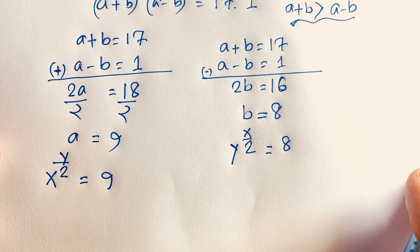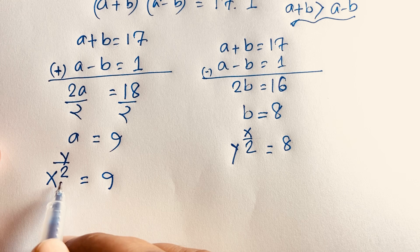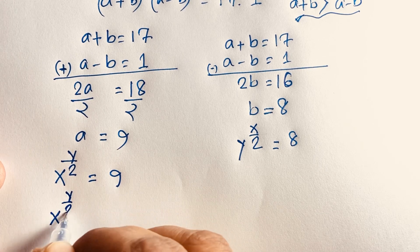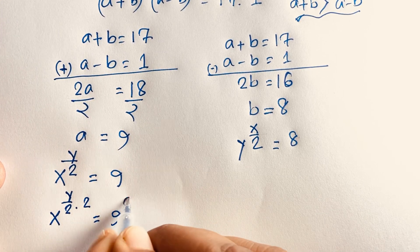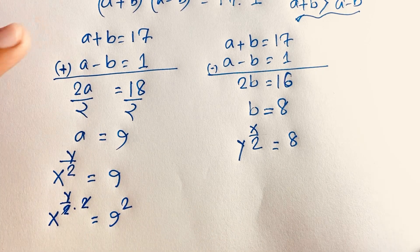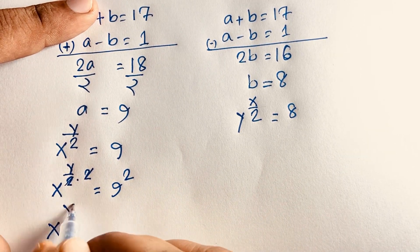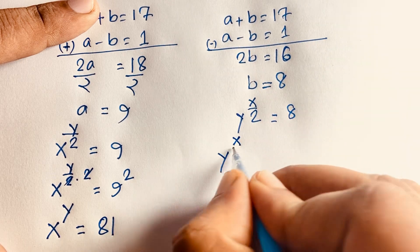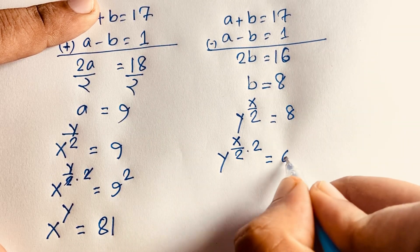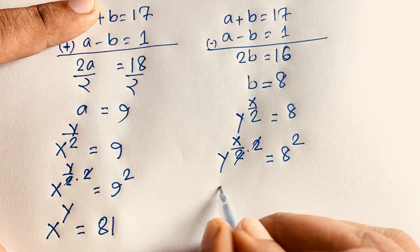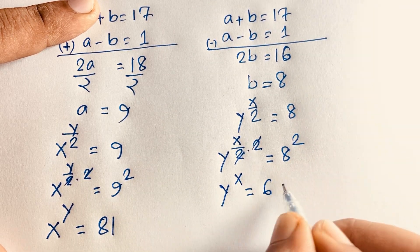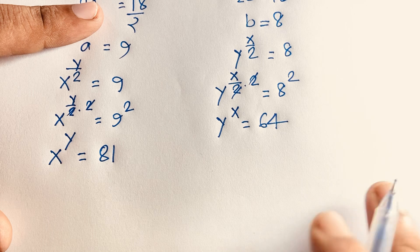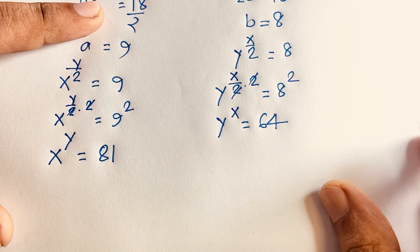In this expression, x to the power y over 2 equals 9. If I raise both sides to the power 2, I get x to the power y over 2 times 2, which equals 9 squared. The 2s cancel and I find x to the power y equals 81. Similarly, y to the power x over 2 times 2 equals 8 squared. The 2s cancel and y to the power x equals 64.